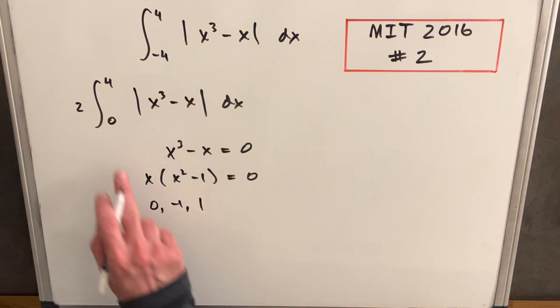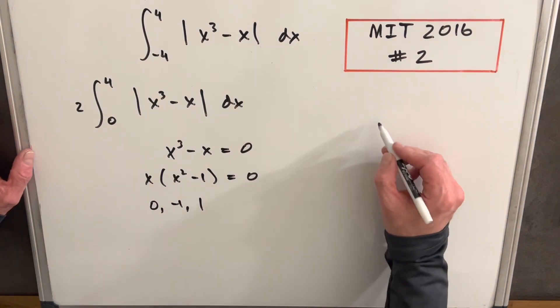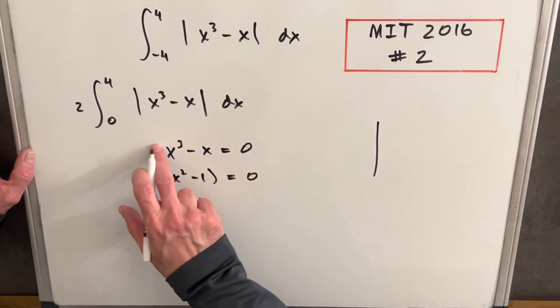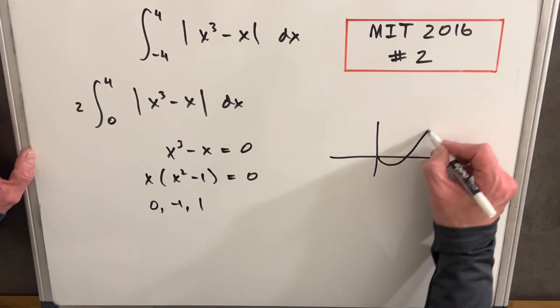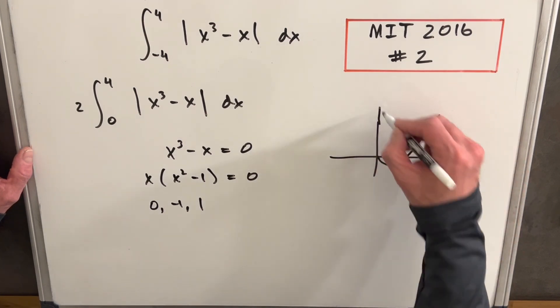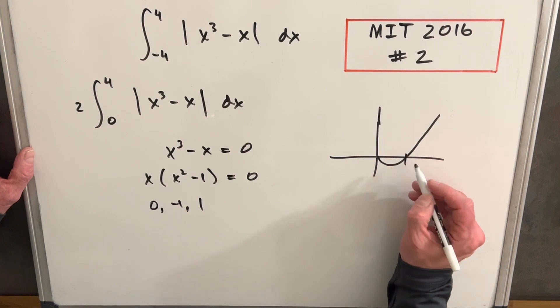We're not interested in minus one because our bounds are zero to four. And so what we notice, the graph of this, not with the absolute value, just this function x cubed minus x, it's going to look kind of something like that. That's pretty vague, but this point here is one.